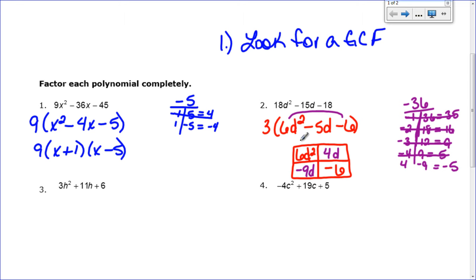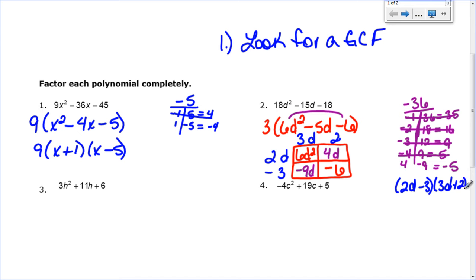Now I find the GCF for each row and column. The top row — 6d squared and 4d — has a GCF of 2d. The bottom row has a negative in both boxes, so I take out a negative, and the biggest number into both 9 and 6 is 3. The left column — 6d squared and negative 9d — has GCF of 3d. The right column — 4d and negative 6 — has GCF of 2. So my two factors are (2d minus 3) and (3d plus 2), with the 3 factored out at the beginning. The full factored form is 3(2d minus 3)(3d plus 2).